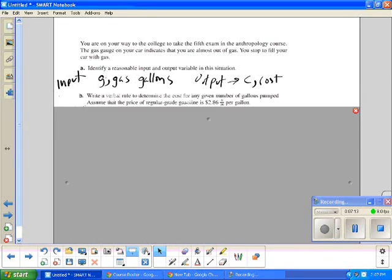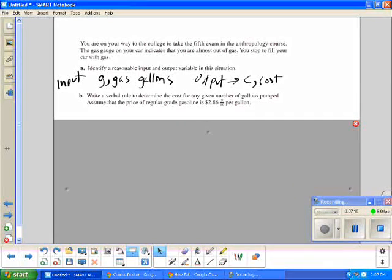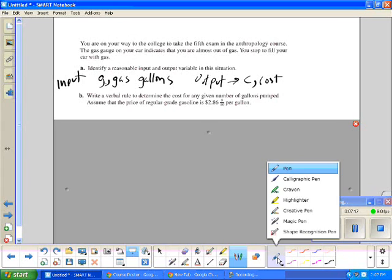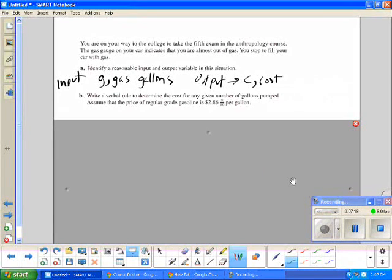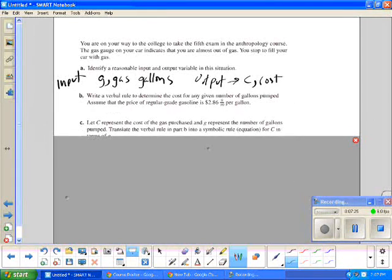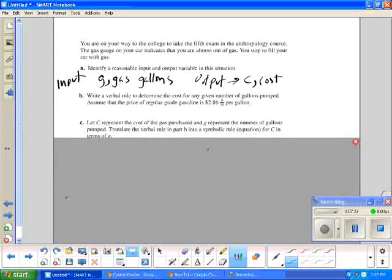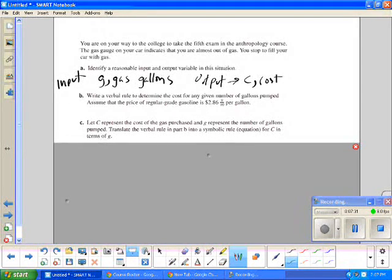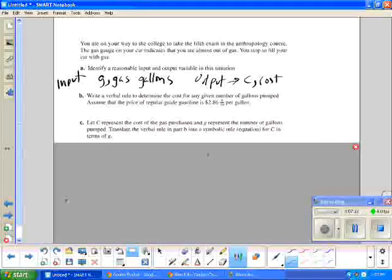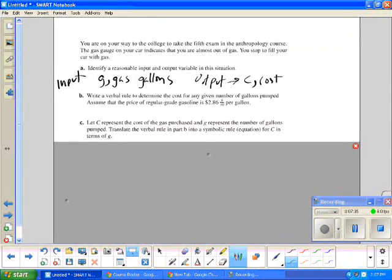Looking at the next question, they want me to write a verbal rule. Determine the cost for any given number of gallons pumped. Assuming that the price of regular gas is $2.86 and nine-tenths per gallon. For simplicity's sake, I'm just going to make this $2.87 cents per gallon.